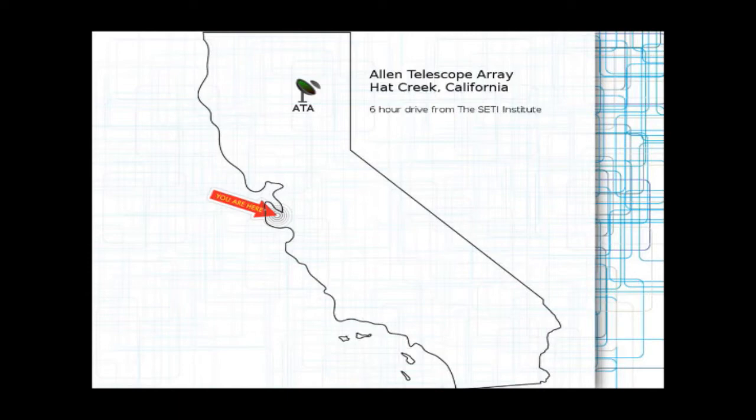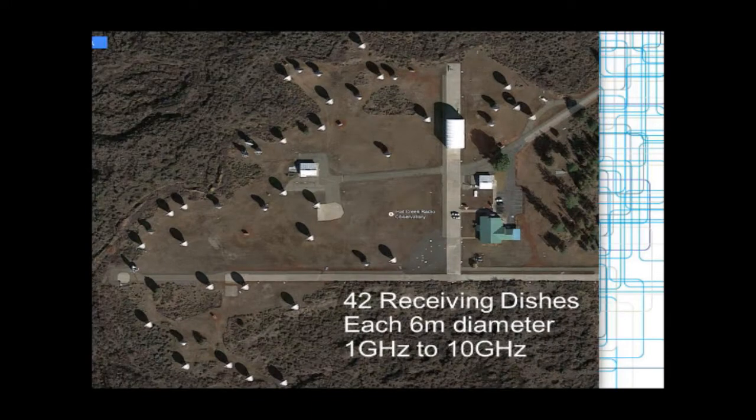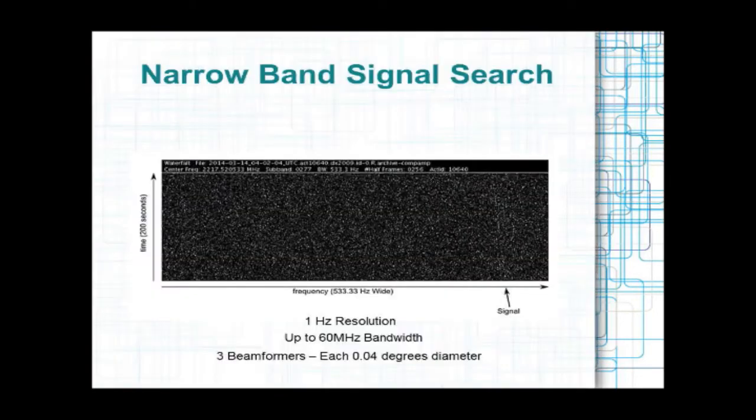It's way out in the middle of nowhere. It's in a big bowl surrounded by mountains. There's not much radio frequency interference, so it's a very nice place to have a radio telescope. I got this image off of Google Earth. Here's a sky eye view of the place. There's 42 dishes, each dish is six meters in diameter, and can point anywhere in the sky. Commonly we point them all in one direction and form a beam and see if we can see signals from the sky. Our frequency range we receive is one gigahertz to ten gigahertz currently.